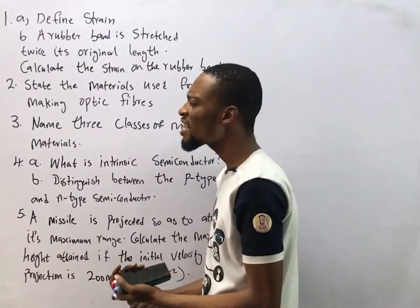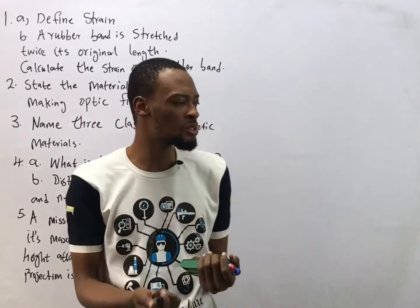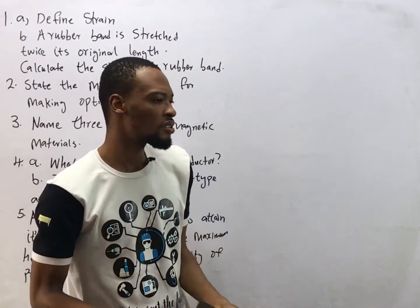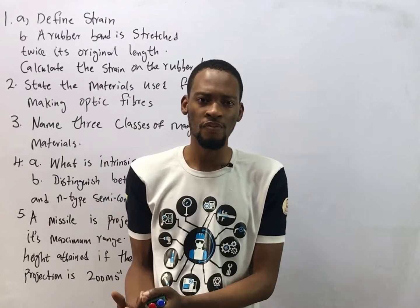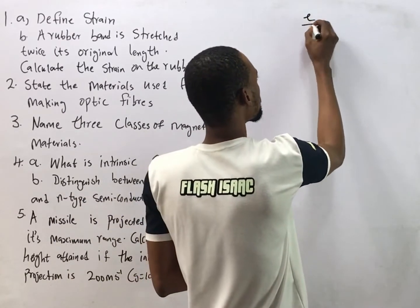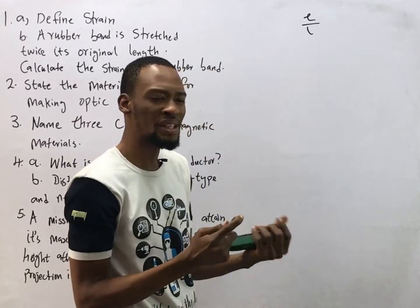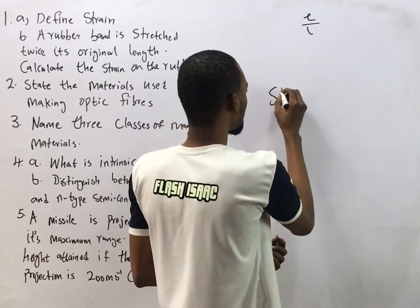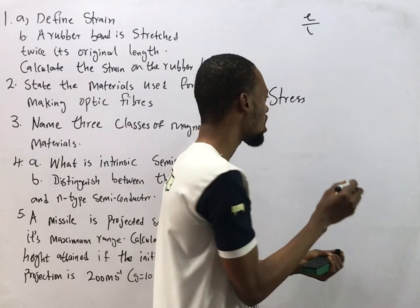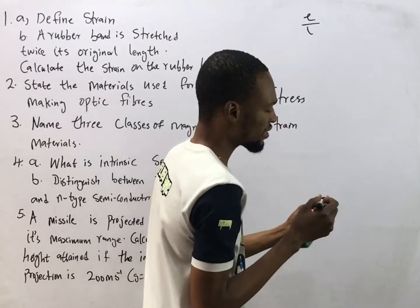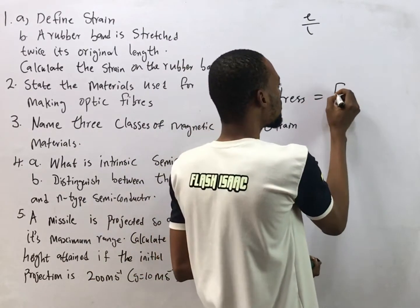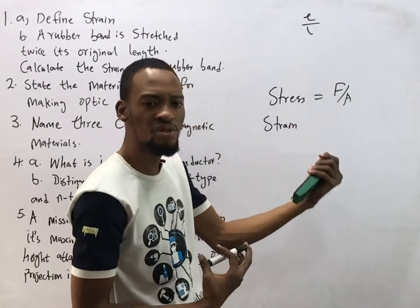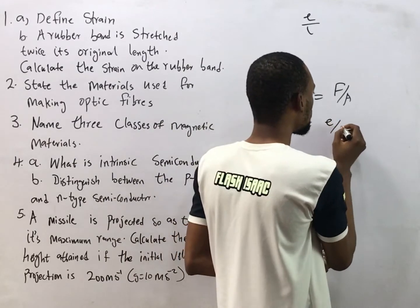Define strain. Strain can be defined as the distortion or change in shape and size of a body due to a force applied. Strain is simply extension over length. In materials science, we also have tensile stress, which is simply force per unit area — force acting per area.